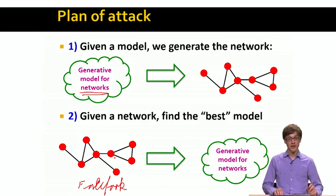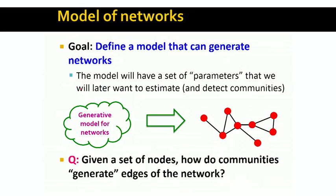Our next thing is to actually say what is a good generative model for networks. Our goal is to define a generative model for networks, and our model will have a set of parameters that we will later want to estimate given our real data. By estimating those parameters, we will implicitly detect these social communities. So the question is: given a set of nodes, how do communities generate the edges of the underlying social network?